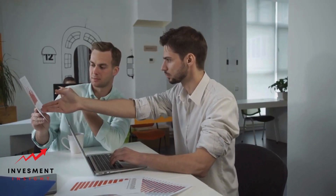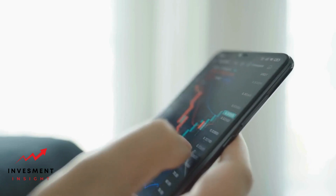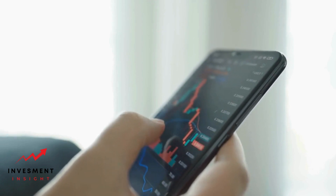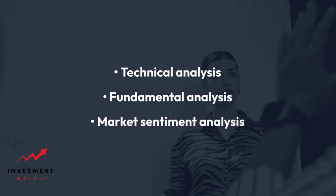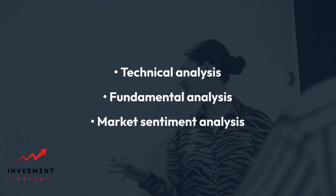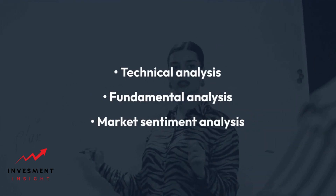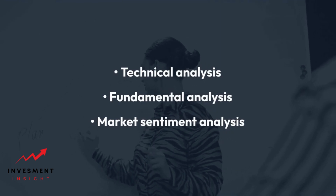Buy and sell fundamentals: when trading in financial markets, there are two basic actions — buying and selling. Buying is the act of acquiring a financial instrument with the expectation that its value will increase. Selling is the act of disposing of a financial instrument with the expectation that its value will decrease. Traders use a variety of strategies to make buy and sell decisions, including technical analysis, fundamental analysis, and market sentiment analysis.